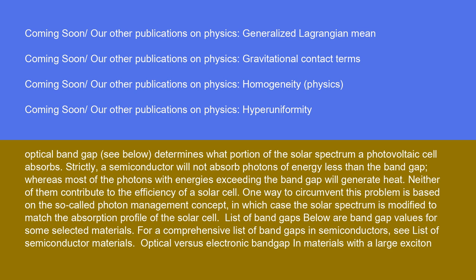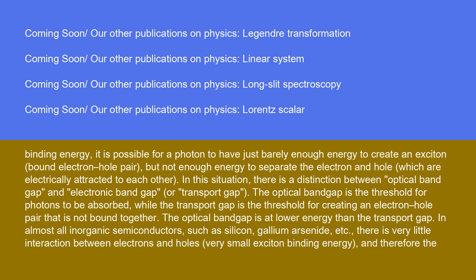Optical versus electronic band gap in materials with a large exciton binding energy: It is possible for a photon to have just barely enough energy to create an exciton (bound electron-hole pair), but not enough energy to separate the electron and hole, which are electrically attracted to each other. In this situation, there is a distinction between optical band gap and electronic band gap (or transport gap). The optical band gap is the threshold for photons to be absorbed, while the transport gap is the threshold for creating an electron-hole pair that is not bound together. The optical band gap is at lower energy than the transport gap.